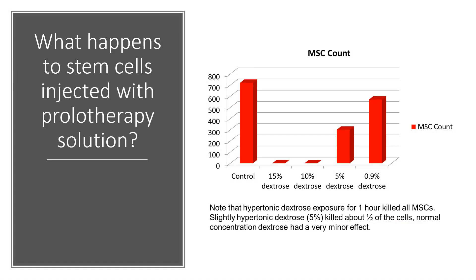What happens to stem cells injected with prolotherapy solution? We actually did this research a long time ago, and as you can see, at 10% to 15% — which are the common prolotherapy solutions — stem cells died, a complete death. Even at 5%, which is a solution commonly used these days not for prolotherapy but for nerve work or with a sweet caudal epidural, caused about half the stem cells to die.